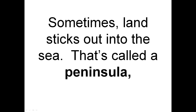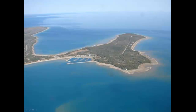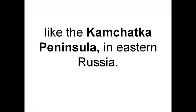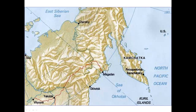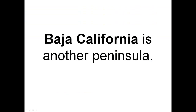Sometimes land sticks out into the sea — that's called a peninsula. Like the Kamchatka Peninsula in eastern Russia. Baja California is another peninsula.